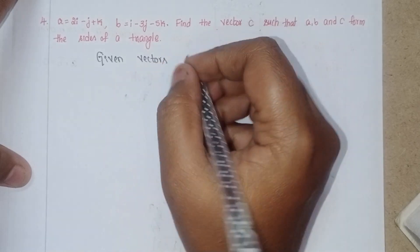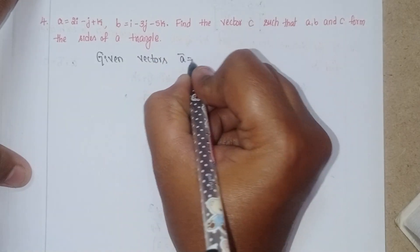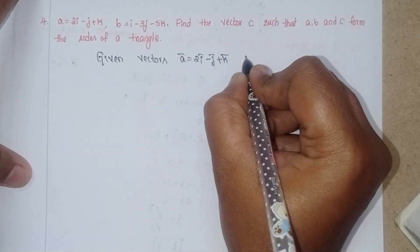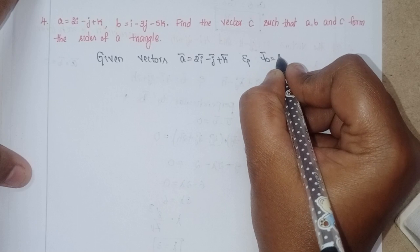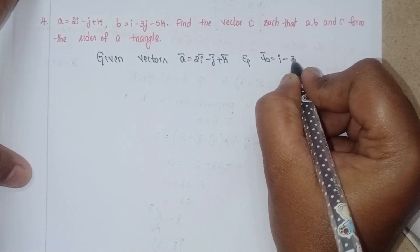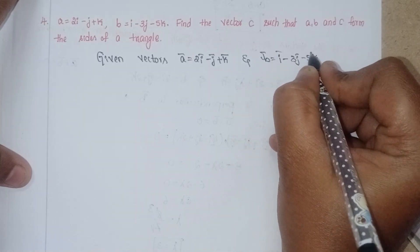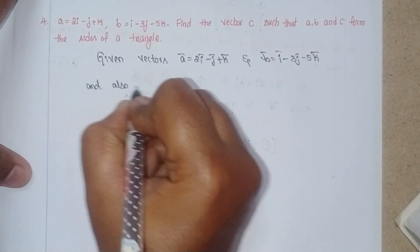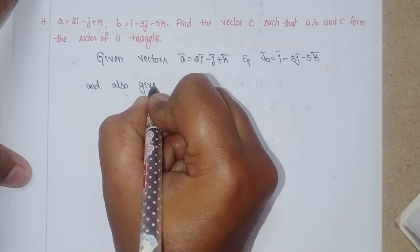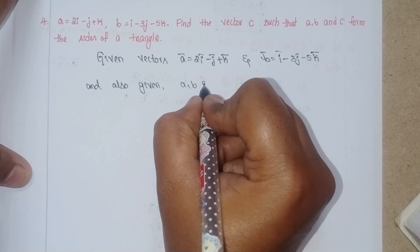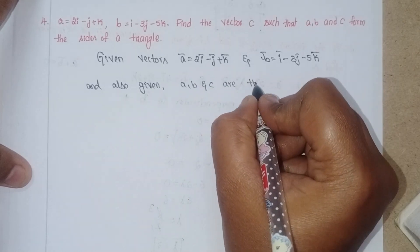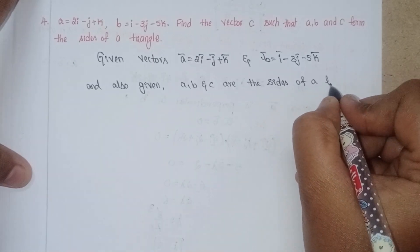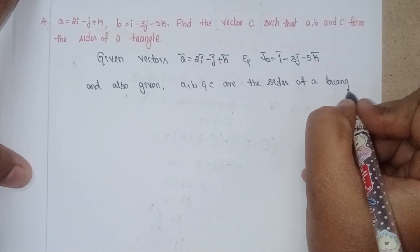Given vectors: A = 2i - j + k and B = i - 3j - 5k. Also given that A, B, and C are the sides of a triangle.